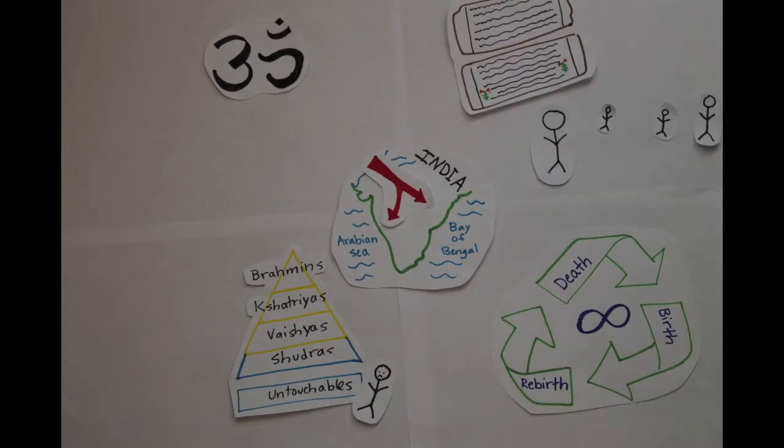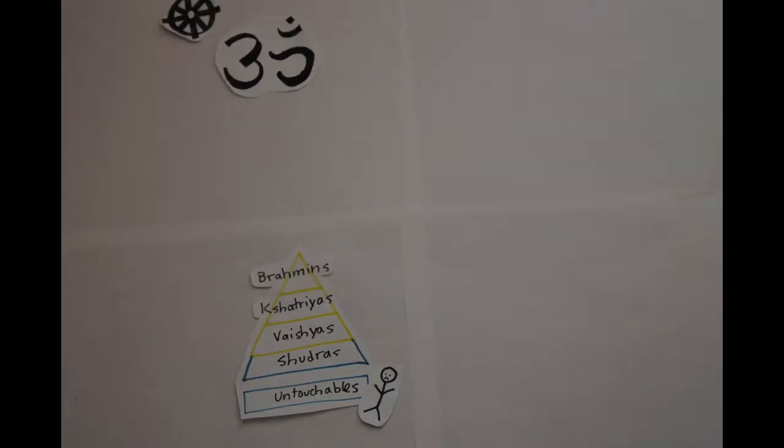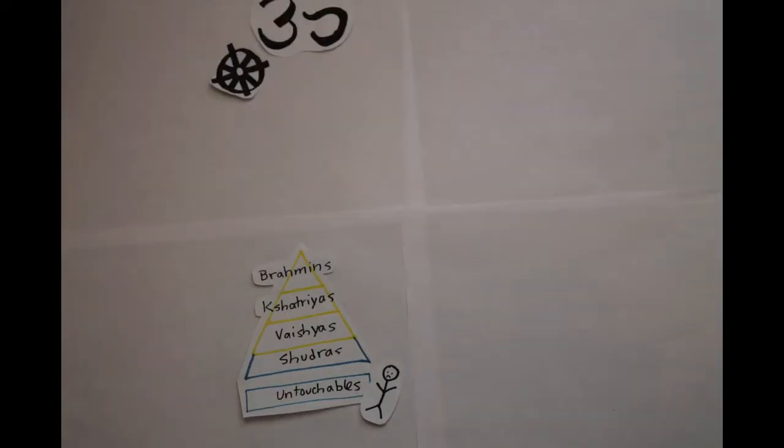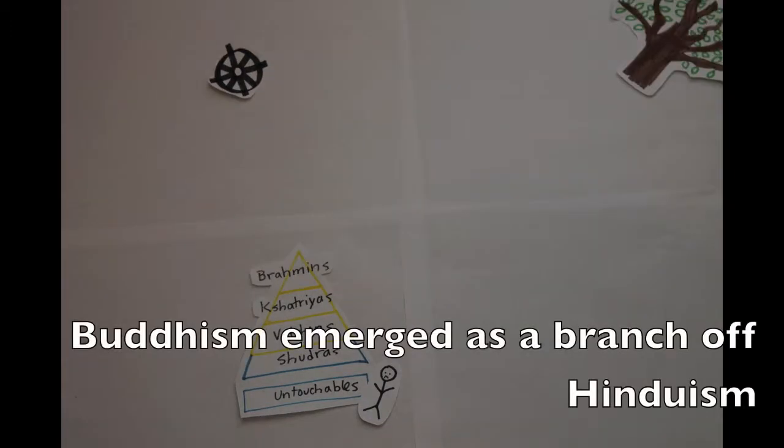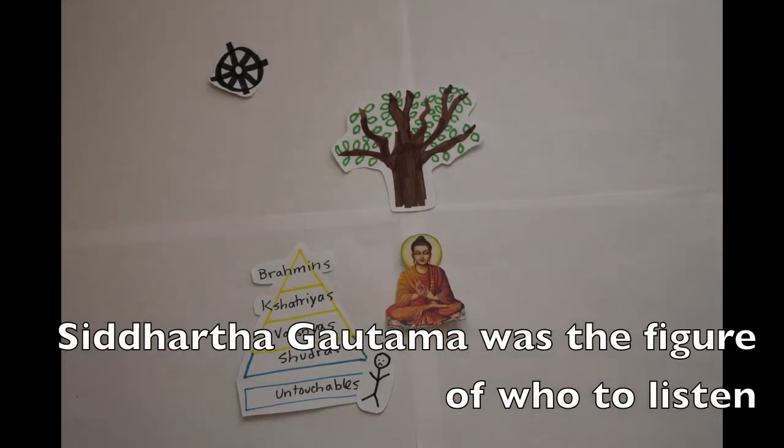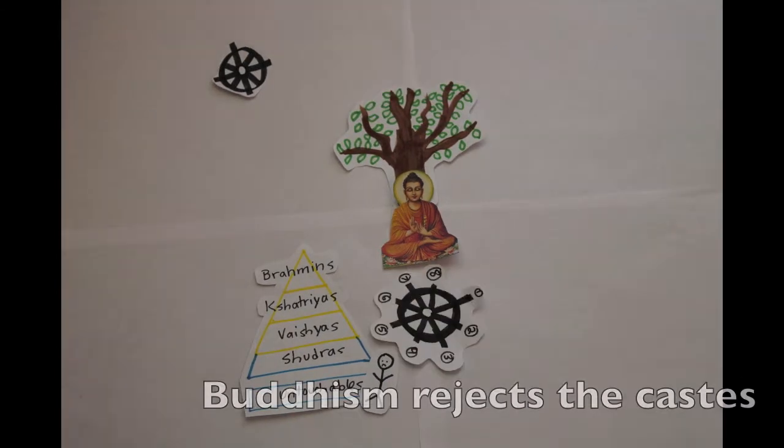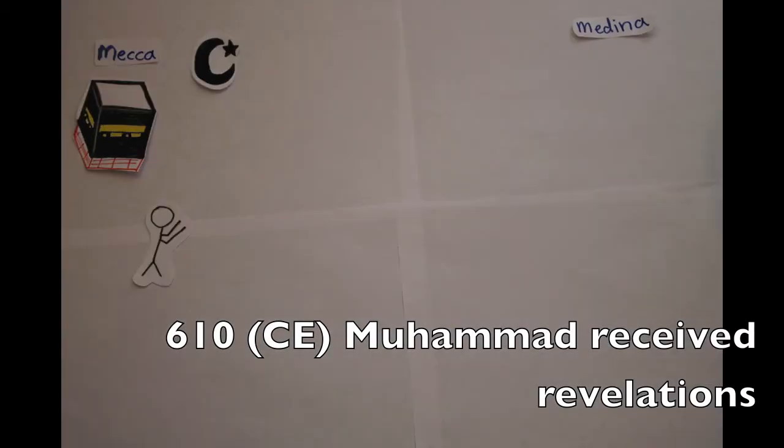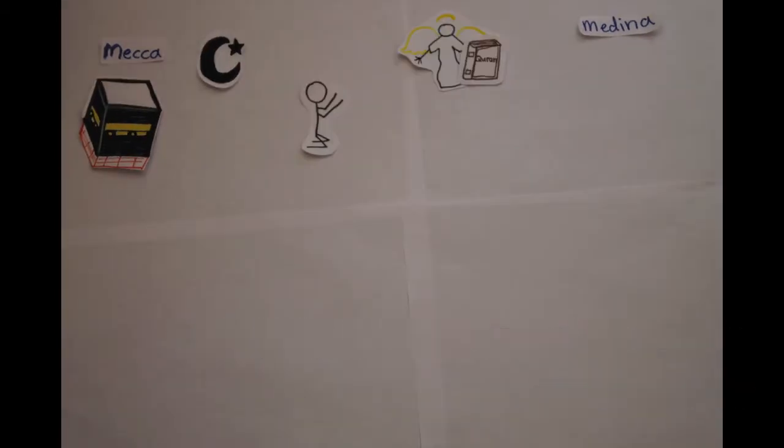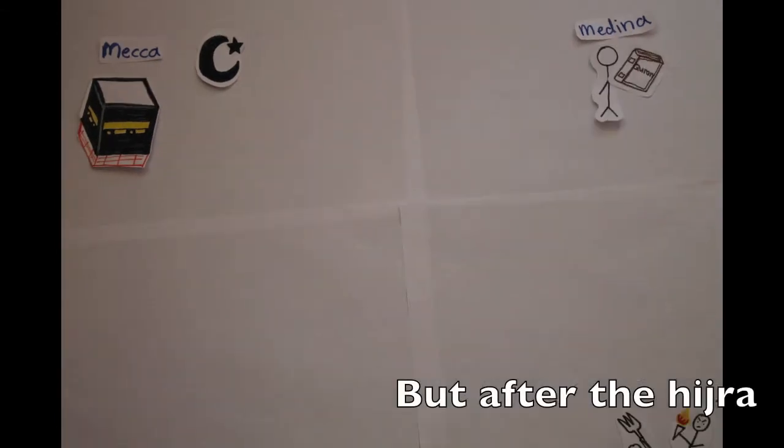In 610, Muhammad received revelations, but Allah was the God who didn't mind cooperation. But after the Hijra, religion spread through Dar al-Islam.